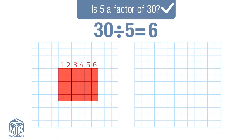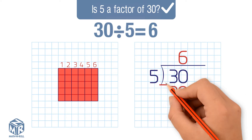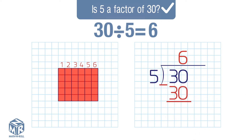This means that 5 is a factor of 30. Let's try solving using long division: 30 divided by 5. We put 6 at the top. 5 times 6 equals 30, so we subtract 30 from 30. We get 0. The remainder is 0, so 5 is a factor of 30.